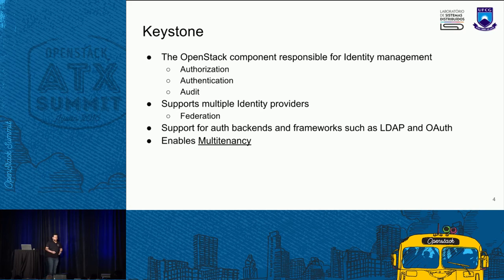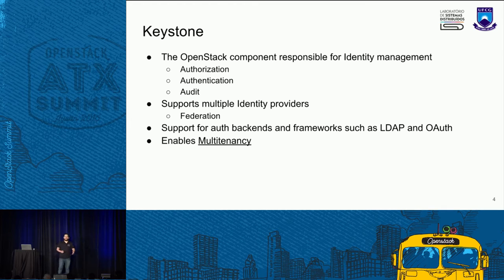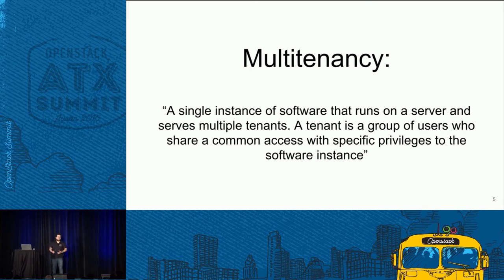Just a quick overview of Keystone, which is the OpenStack component responsible for identity management. Keystone deals with authorization, authentication, and audit. Among its features, there is support for multiple identity providers, which it enables throughout Federation. Keystone also has support for very well-known tools at the market, various backends and frameworks such as LDAP and OAuth. The big feature of Keystone we are interested in here is multi-tenancy, which we define as a single instance of software that runs on a server and serves multiple tenants — a group of users that share common access with specific privileges to some parts of the software instance.